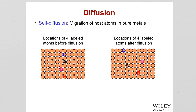To understand self-diffusion, we look at a pure metal where all atoms are the same. We might think: how can these atoms move? Actually, atoms are always moving in a material — the atom doesn't stay in its position; it moves around. That is what we call self-diffusion in a pure material.